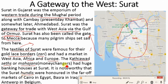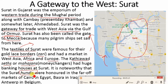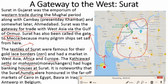The hundi system worked like this: traders who needed to trade would get a document — a hundi — from a mahajan, recording a money amount. When the trader arrived at another place, they presented the hundi to another mahajan there, who gave them the equivalent money. This way, carrying physical cash on the journey was avoided, making travel much safer.